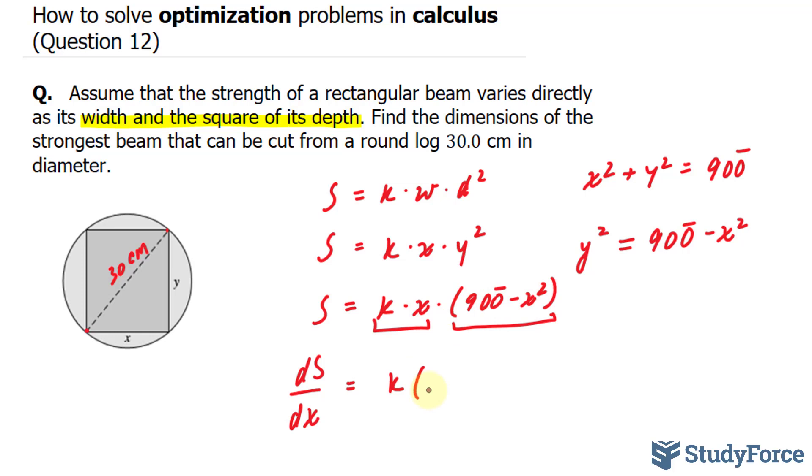And we'll leave this part the same, 900 minus x squared. Now I'll take the derivative of this expression, which is easy. This becomes zero and that becomes negative 2x. Plus negative 2x times this expression. We don't touch that expression, kx.